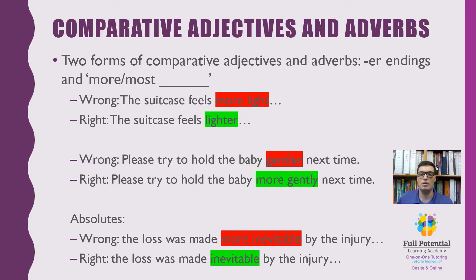In the second sentence, 'please try to hold the baby gentler next time' must be corrected in order to correctly have the proper comparative form. Finally, we have absolutes. Absolutes do not take any comparative form since you can't have more or less of an absolute, which is why 'more inevitable' must be changed to 'inevitable' in the sentence below. Understanding comparative forms is key to the practice ahead, but understanding them now allows you to visualize how to use them.